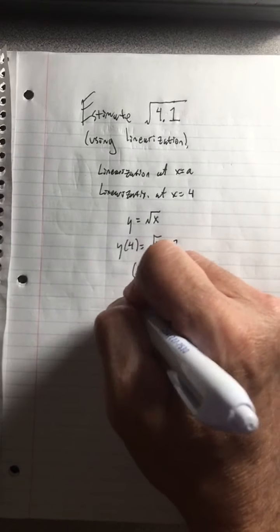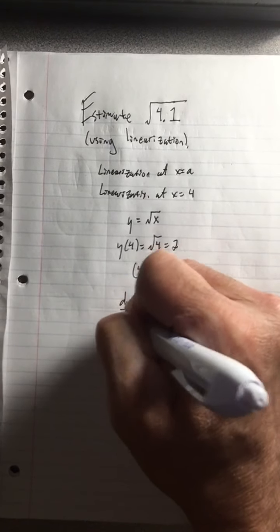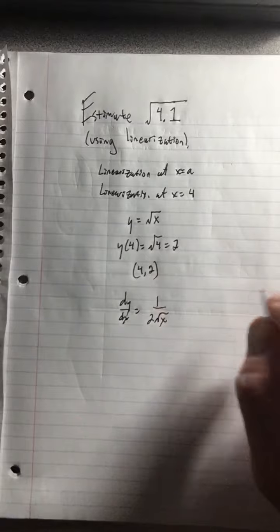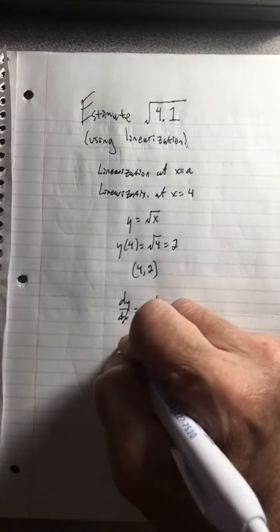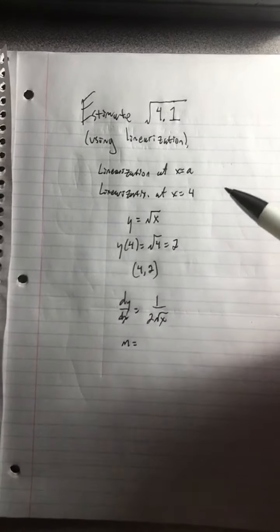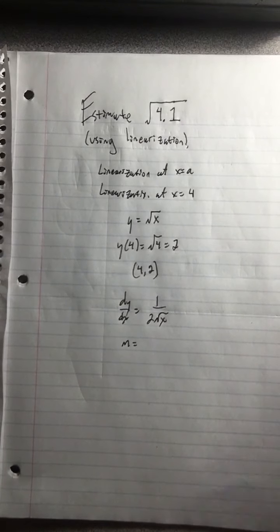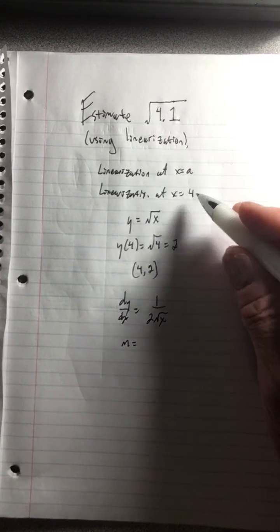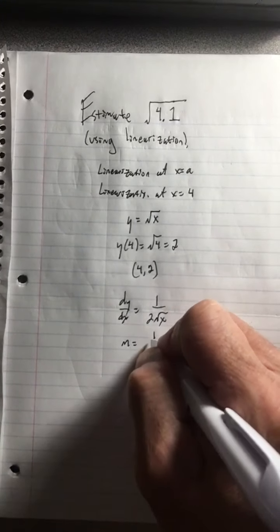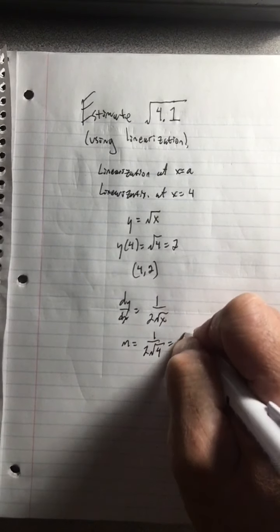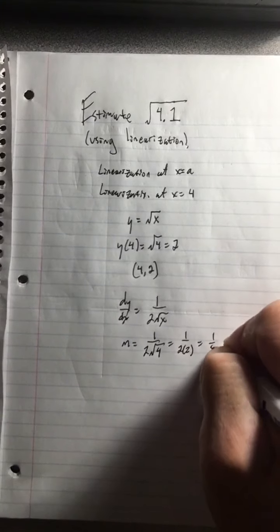The next thing you need is the derivative. So we need to get the derivative. Hopefully by now, you know that the derivative of the square root of x is 1 over 2 root x. And the slope then for the tangent line, because the curve and the line share the same slope. And we're interested in the tangent at 4. So the slope of the curve at 4 is 1 over 2 root 4, which gives me 1 over 2 times 2, which is 1 fourth.